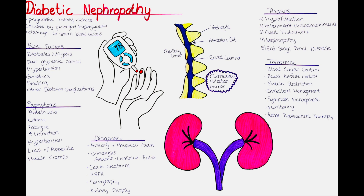Controlling hypertension is also essential in slowing the progression of diabetic nephropathy. Medications such as angiotensin-converting enzyme inhibitors or angiotensin receptor blockers are commonly prescribed to help lower blood pressure and protect the kidneys from further damage. Our goal is usually to lower blood pressure to below 140/90 mmHg. Reducing dietary protein intake may also be recommended, generally below 0.8 g per kilogram of body weight, to lessen the workload on the kidneys and reduce hyperfiltration from phase 1.